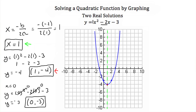Notice that we have two x-intercepts. We have one at x is equal to negative 1 and we have another one at x is equal to 3. So the solutions, or the roots, or the zeros of this quadratic function are x is equal to negative 1 and x is equal to 3.